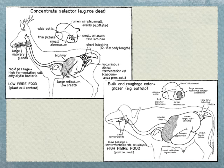I want to focus on anatomical differences between concentrate selectors and grazers. The concentrate selector has a larger liver compared to the grazer because the liver detoxifies the tannins in the concentrate selector's diet. Since grazers consume grasses, which don't have the high concentration of tannins that browse species do, their livers are not as developed because they don't need to purify the blood from those toxic compounds.